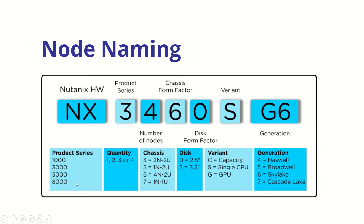The available series are 1000, 3000, 5000, 8000, and possibly newer models. The third block is the number of nodes in the chassis — quantity one, two, three, or four. The fourth block is the chassis form factor; for example, '6' indicates a 2U chassis size. The fifth block is the disk form factor: '0' means 2.5-inch and '5' means 3.5-inch — for this model it's 2.5-inch.